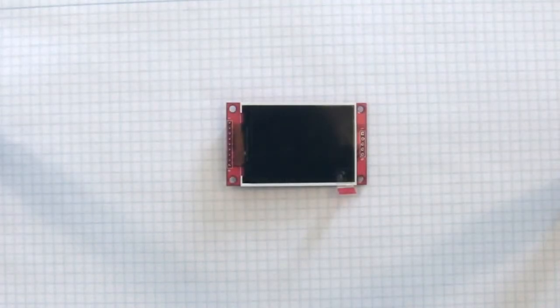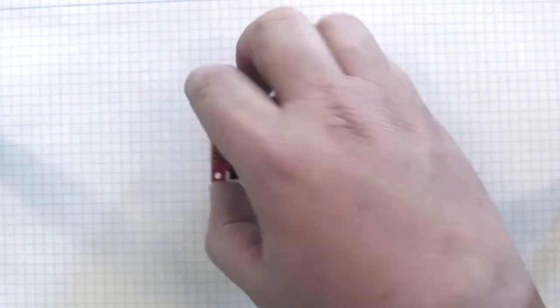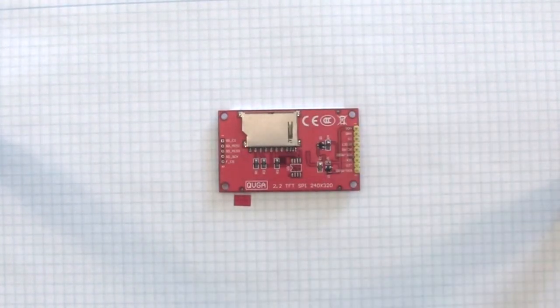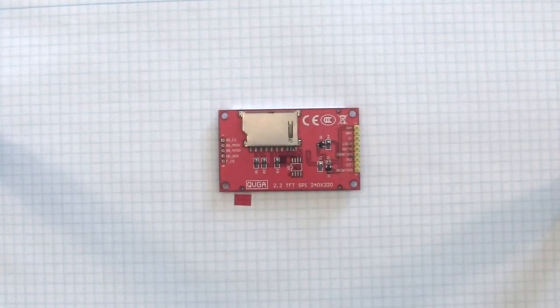This is the display I'll be using. It's a 2.2 inch display, full color. This display is programmed using the SPI bus so it should interface very easily to a microcontroller. And on the back there's a connector for an SD memory card. So I have plenty of space for storing the map.